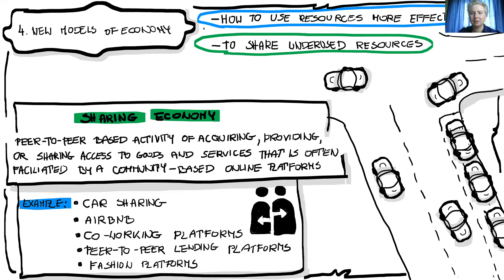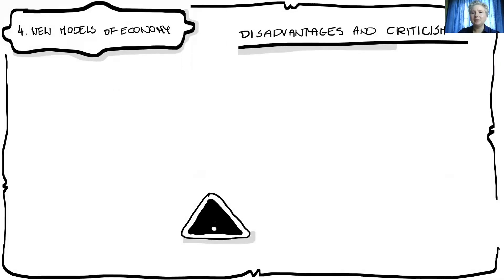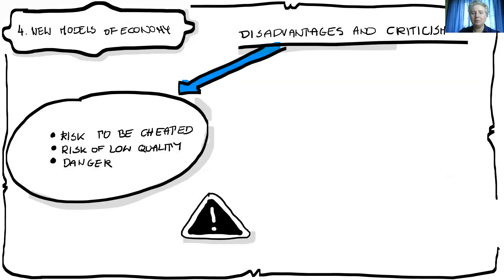You can check on those platforms who is driving your way and could take you to your destination. The idea is very good and could solve many problems, especially in cities. Unfortunately, there are some disadvantages and it has faced a lot of criticism. Some criticism is related to risk and even danger — for example, traveling with someone you don't know or sleeping in a stranger's house. There is also a risk of low quality.